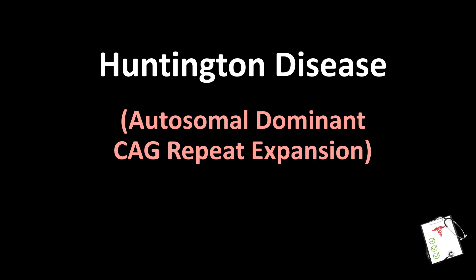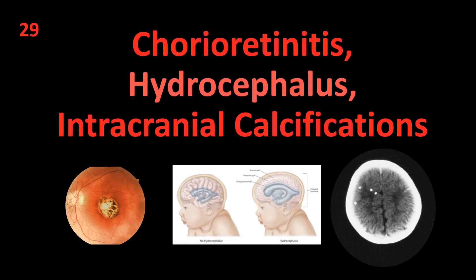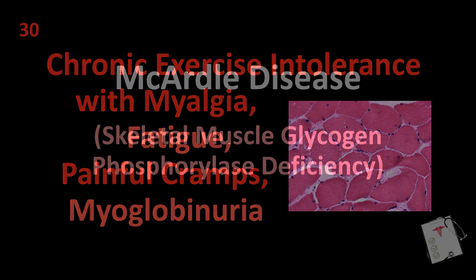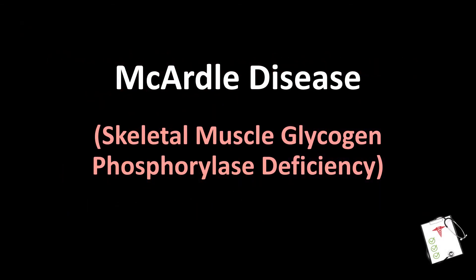Number 30: Chorioretinitis, hydrocephalus, intracranial calcifications. Answer: Congenital toxoplasmosis. Number 31: Chronic exercise intolerance with myalgia, fatigue, painful cramps, myoglobinuria. Answer: McArdle disease — skeletal muscle glycogen phosphorylase deficiency.